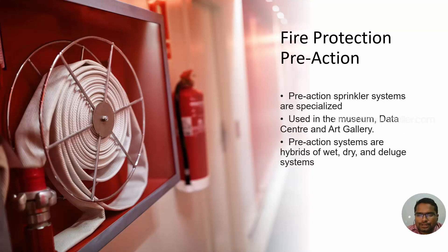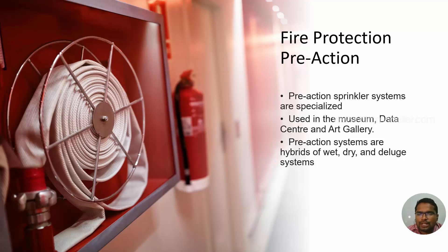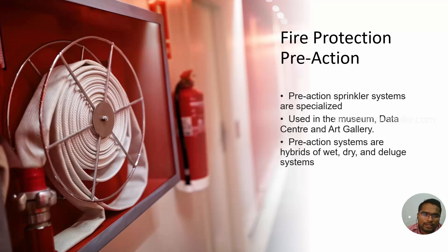Fire protection pre-action. This is a pre-action sprinkler system specially designed and used in museums, data centers, and galleries — places more affected by water where we cannot use a wet or dry system. We have to use a specialized system. The fire should be detected first before releasing water to the system. This is a combination of wet, dry, and delay systems. Water will not be present in the pipes, and the fire alarm and electrical system will detect the fire condition.